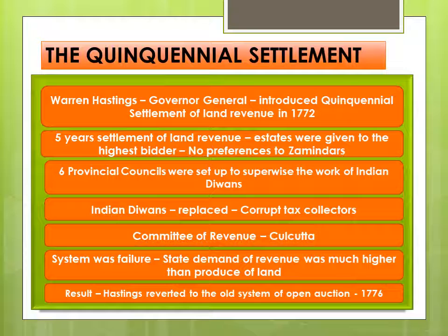This system also proved a failure because the bidding process was not transparent. The state demand of revenue was fixed much higher than the produce of land, and the diwans resorted to harshness in tax collection. As a result, Hastings reverted to the older system of open auction to the highest bidder in 1776. So the Quinquennial Settlement was introduced in 1772 and ended in 1776, after which the process went back to the older system.